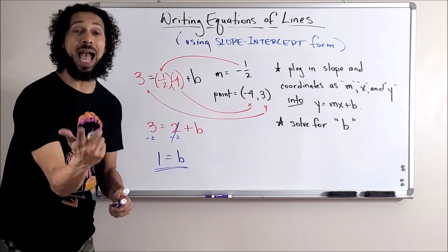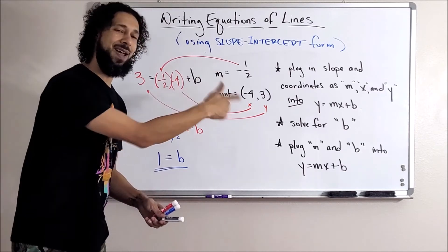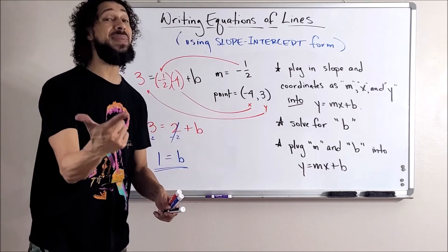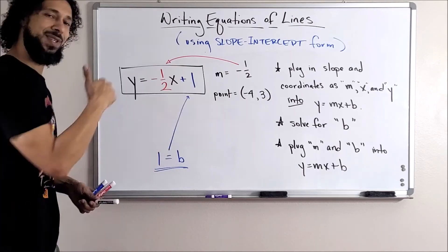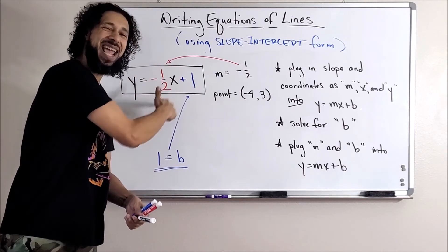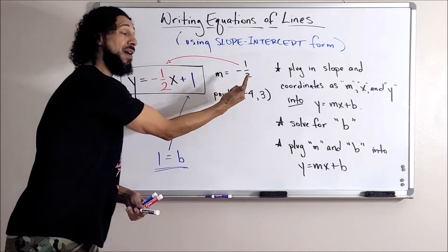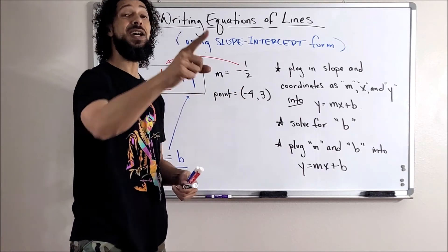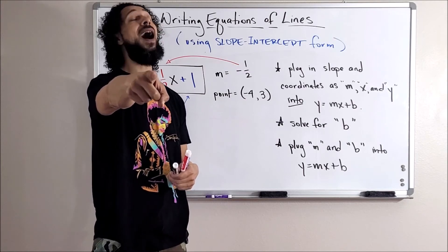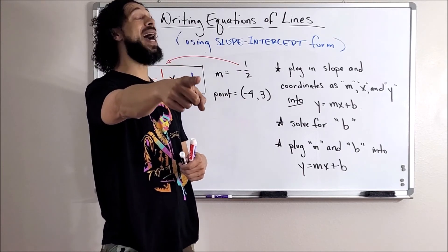Good. And then once we got b, we're going to plug my m and my b back into y equals mx plus b. Looks like this. Yeah, and that's the name of the equation of the line that fits this description. Man, I hope that helps. Don't forget point slope is after this one. I'll check y'all that next time. Bye guys.